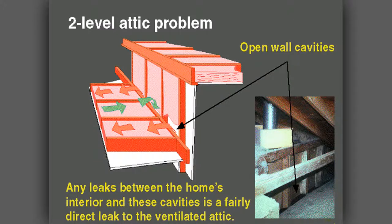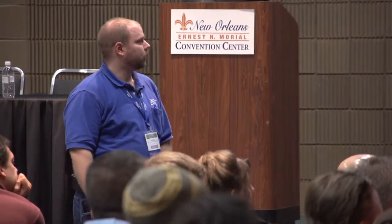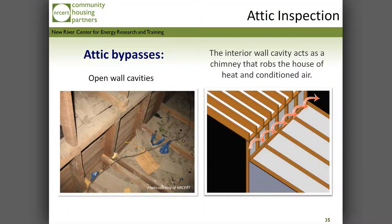The insulation goes to the eight-foot level and stops — that's the thermal boundary — but the pressure boundary is incomplete because there's a big hole. The fix is to seal all the way across and put blocking at the top of that wall — basically a top plate at the eight-foot level. And it's a good idea to put foam board on the back of those knee walls. Treat it just like a knee wall.